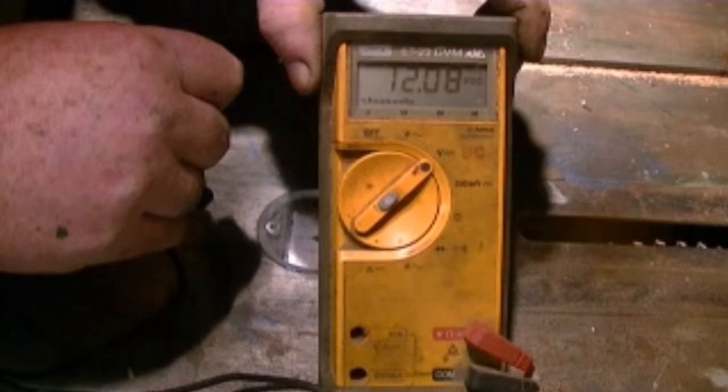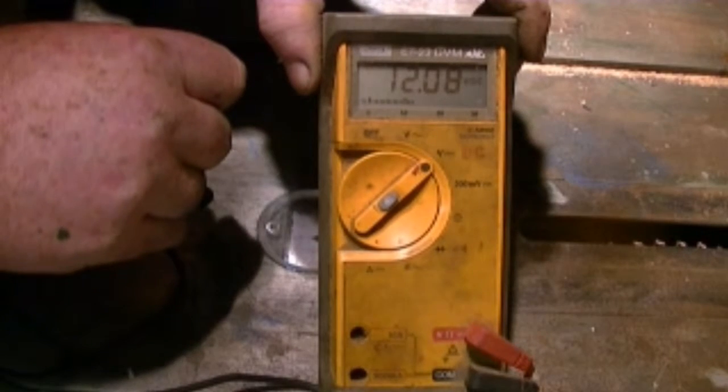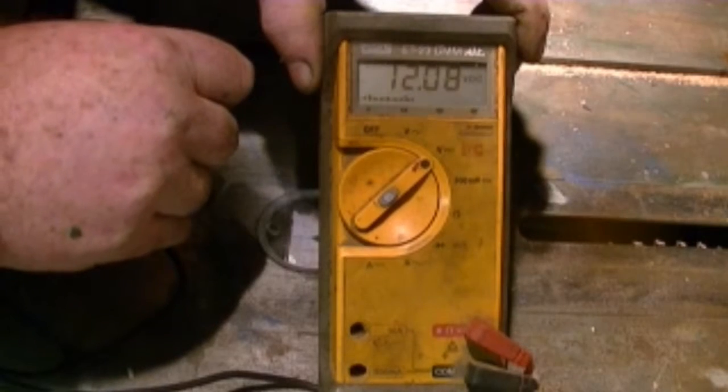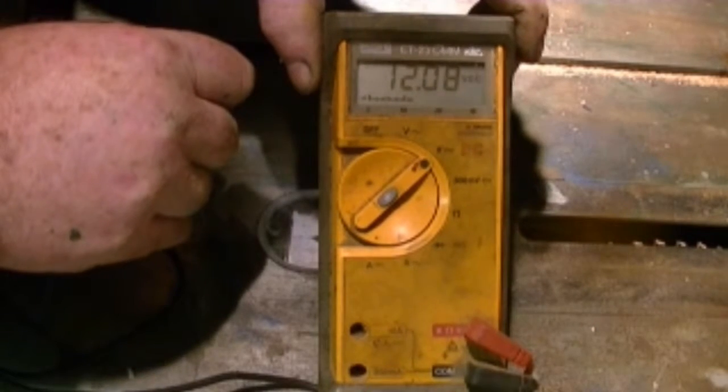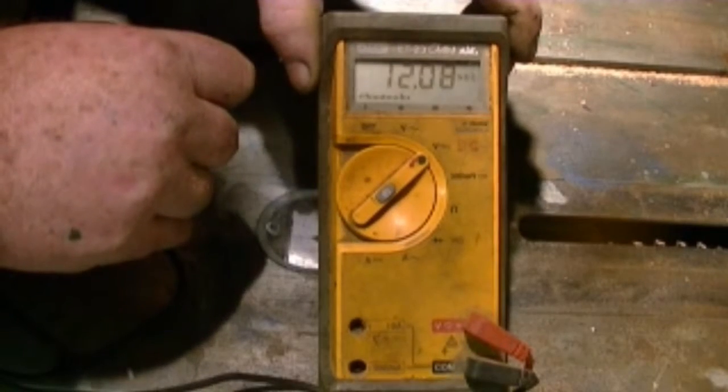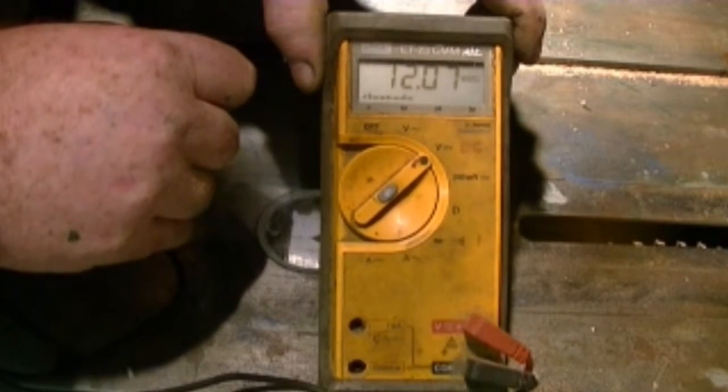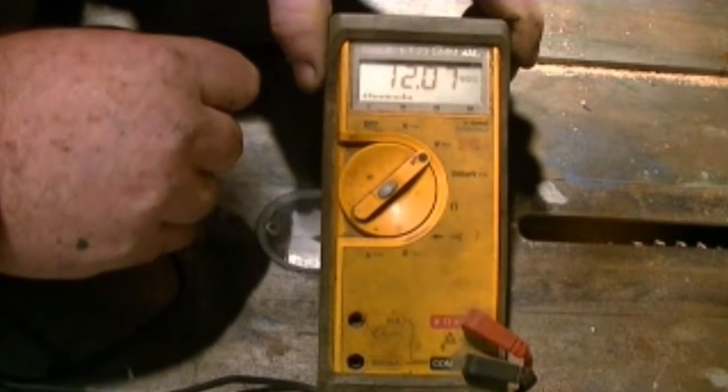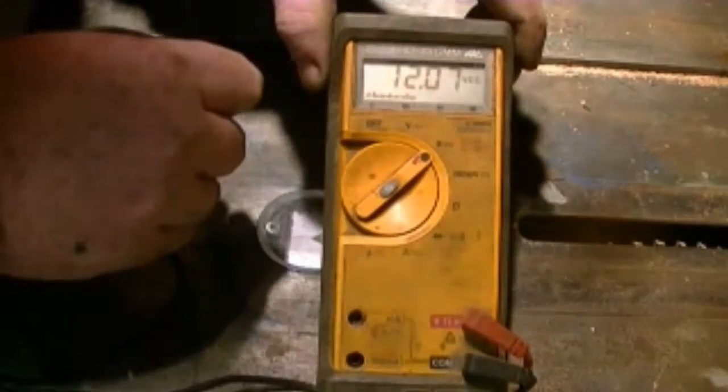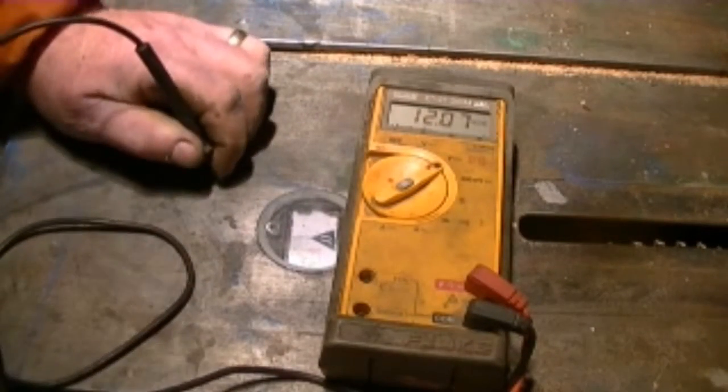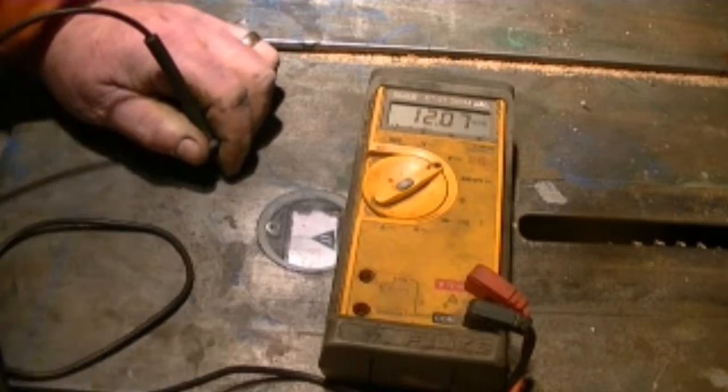Somehow, this table saw is giving me a negative 12 volt DC. And I can't figure out for the life of me how it's doing it. There's no 12 volts hooked up to this thing anywhere. If there was, I'd have a serious problem. Something would be smoking or burning or not working.